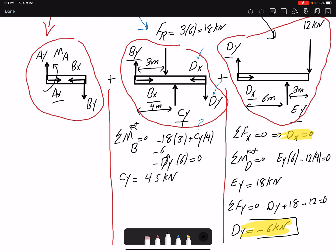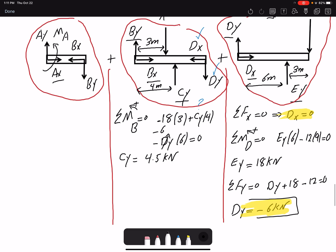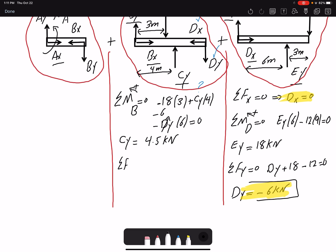Now I just need to write summation of forces in X and Y to find the other unknowns. So summation of forces in X equals zero. Therefore BX would be zero. Summation of forces in Y equals zero. I will get BY to be 7.5 kN. So I found three more unknowns.